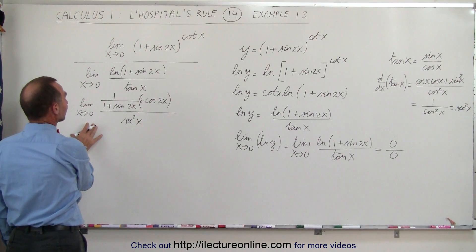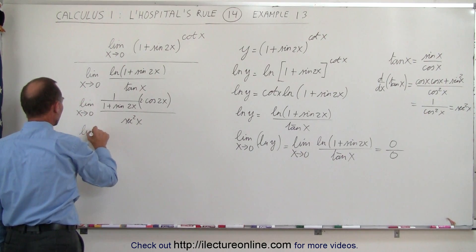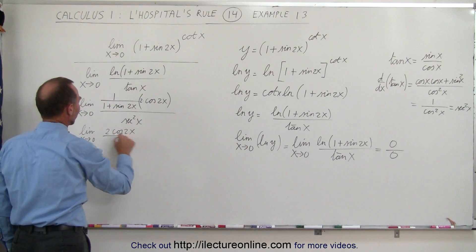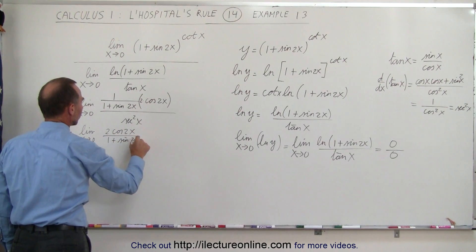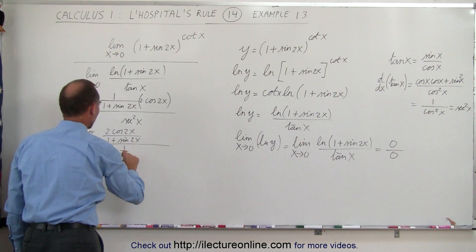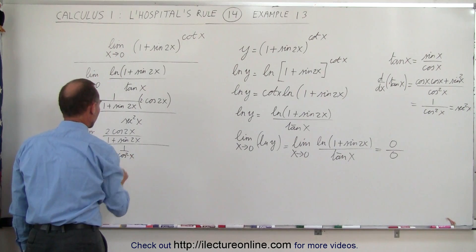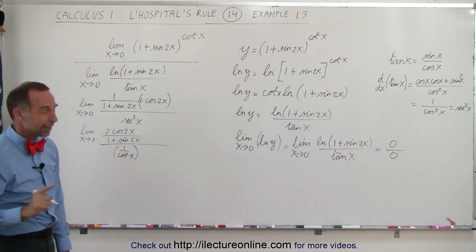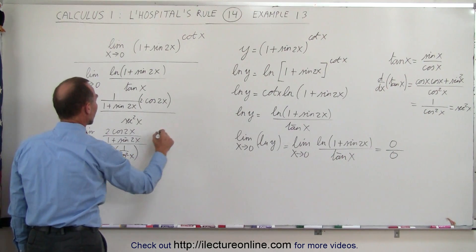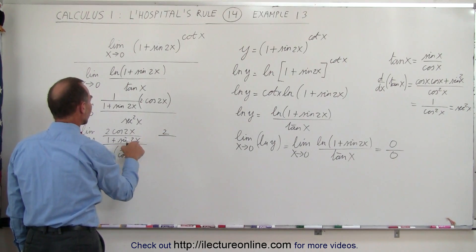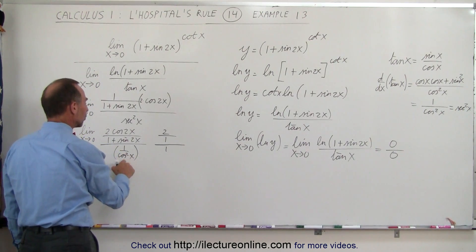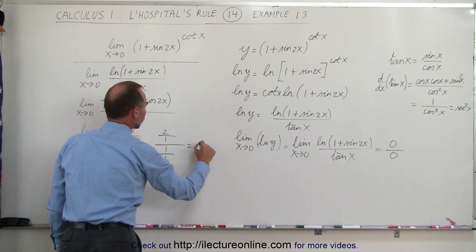Now let's rewrite and take the limit. We have the limit as x approaches 0 of 2 times cosine of 2x, divided by 1 plus sine of 2x in the numerator, divided by 1 over cosine squared of x in the denominator. Applying the limit with x going to 0: cosine of 0 is 1, so 2 times 1 gives 2. Sine of 0 is 0, so the denominator of the top fraction becomes 1, giving 2 over 1. And cosine of 0 is 1, so 1 over 1 equals 1. The result is 2.